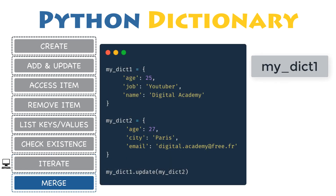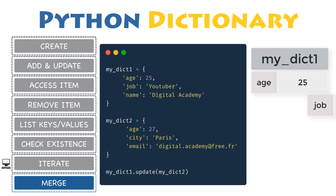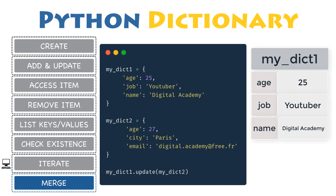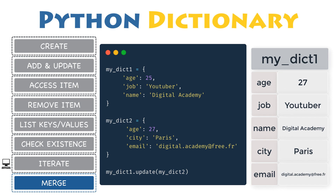You may sometimes want or need to merge two dictionaries, so you can have all your data in the same variable or update its values with new content. Use the built-in update() method to merge the keys and values of one dictionary into another. Note that this method blindly overwrites values of the same key — if there is already an existing key in the first dictionary, its value will be updated with the new one, and new keys will be created if they did not already exist.